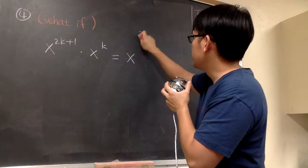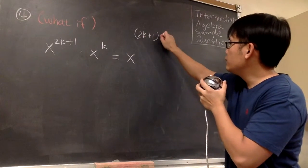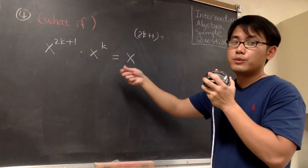So I'm just going to write down the 2k plus 1. This is the power for the first term. And then we will add it with the power for the second term, which is just the k.